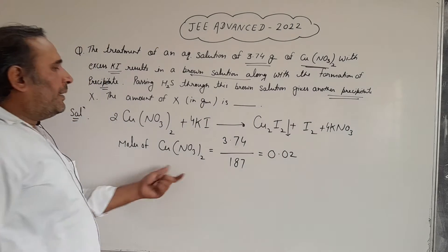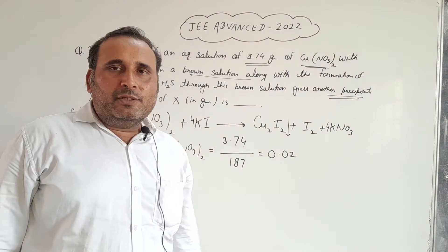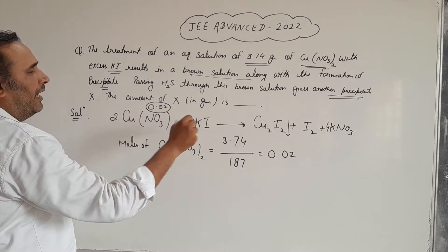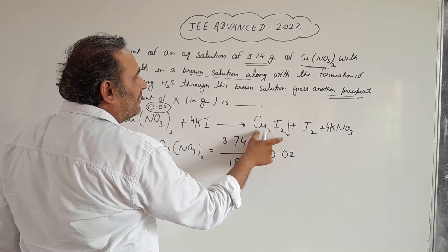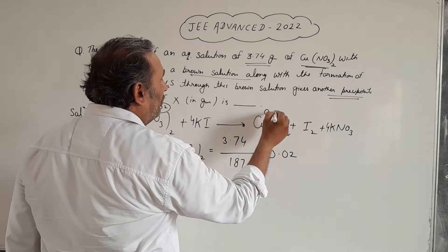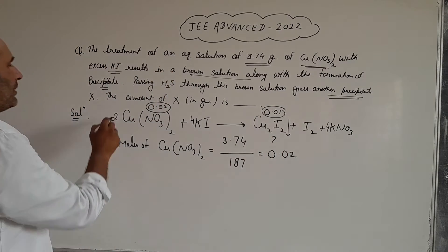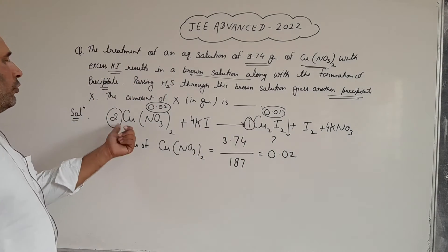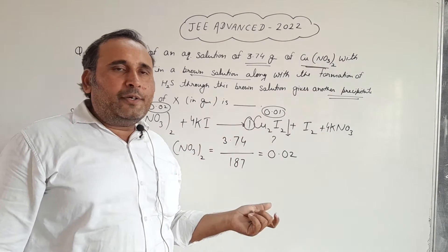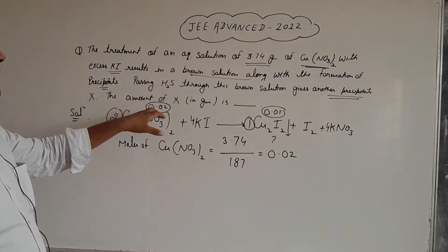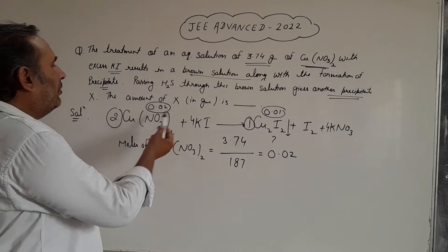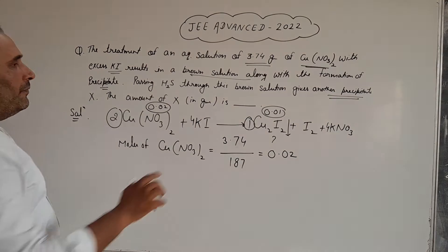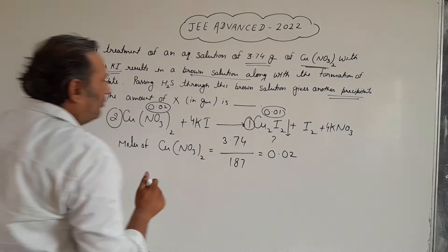We are taking copper nitrate at 0.02 moles, so how many moles of Cu₂I₂ will be produced? That will be 0.01 moles, because the molar ratio is 2:1. When we take 2 moles of copper nitrate, we get 1 mole of Cu₂I₂. So when we take 0.02 moles of copper nitrate, we will get 0.01 moles of Cu₂I₂.